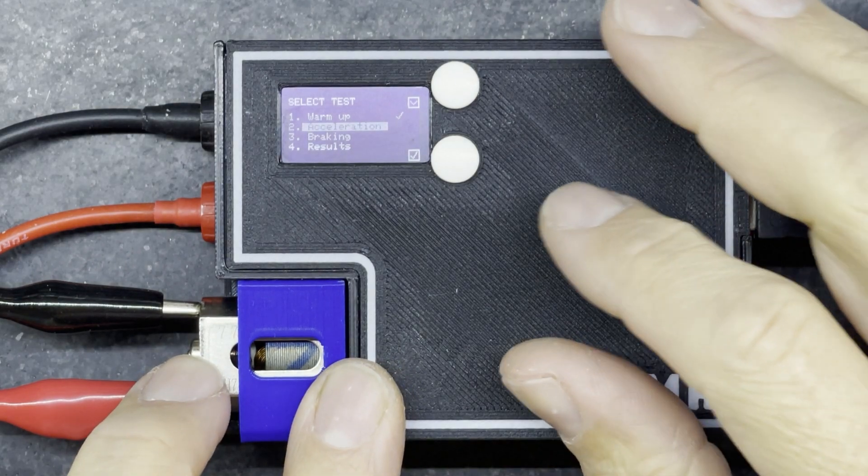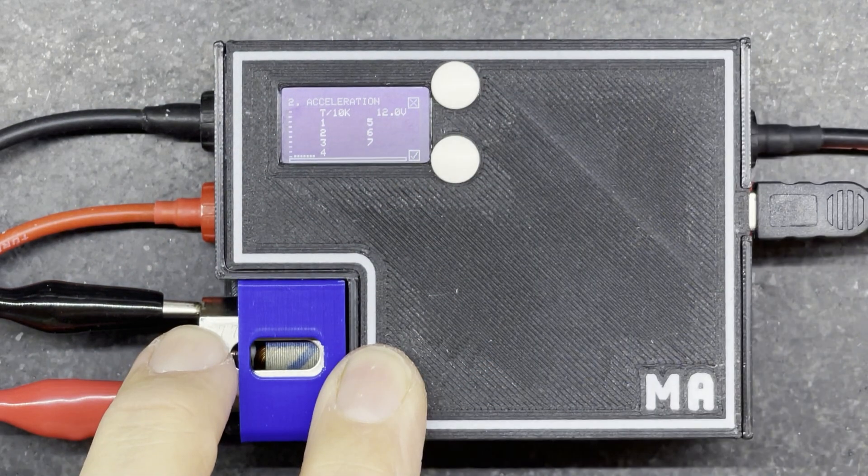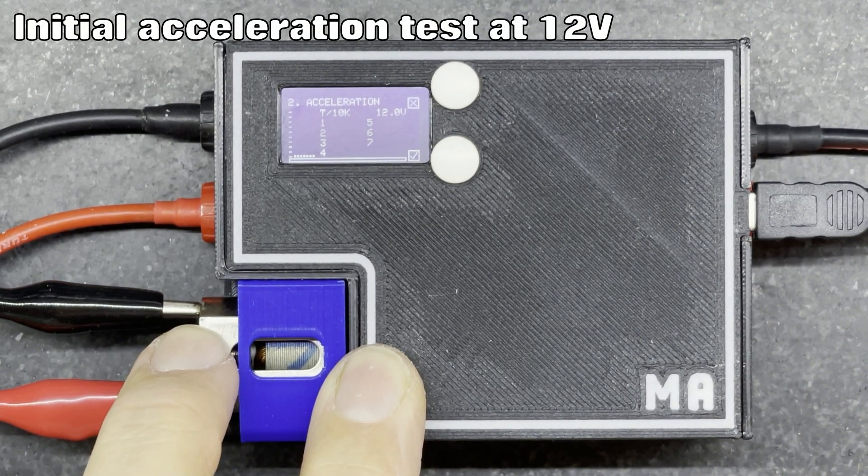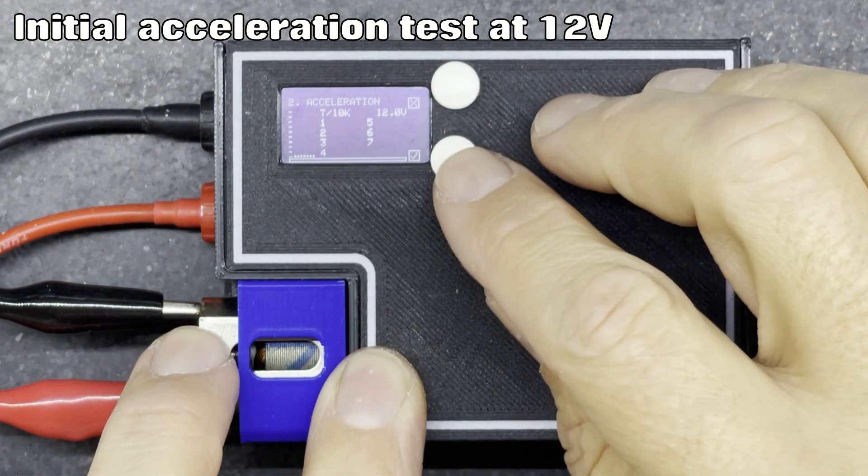Next up I'll run my acceleration test. My acceleration test I'm going to run at 12 volts because that's what the track's running at. This tells me how quickly it accelerates through the RPM range.